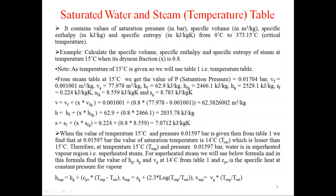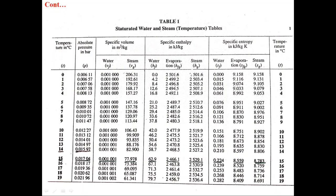The first is the saturated water and steam temperature-based table. It contains values of saturation pressure in bar, specific volume in meter cube per kg, specific enthalpy in kJ per kg, and specific entropy in kJ per kg Kelvin, from 0°C to 373.15°C which is the critical temperature.